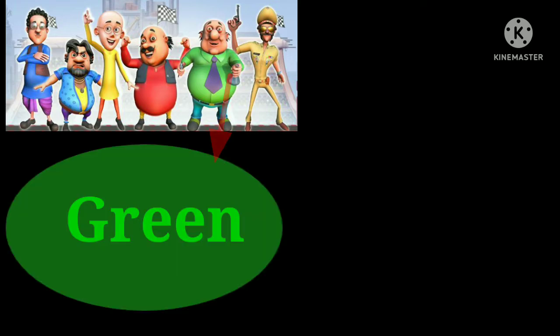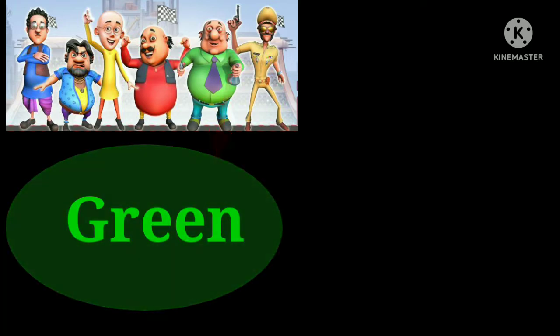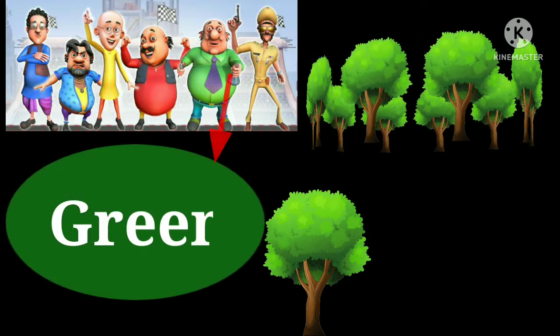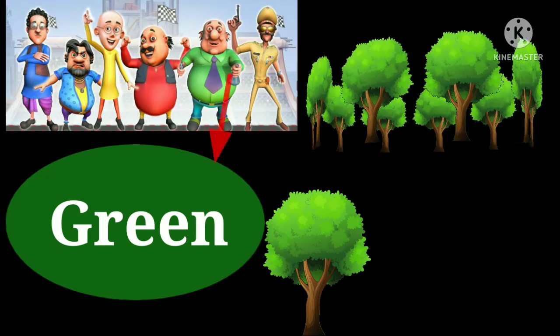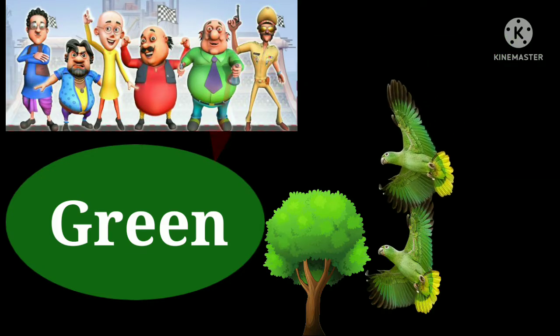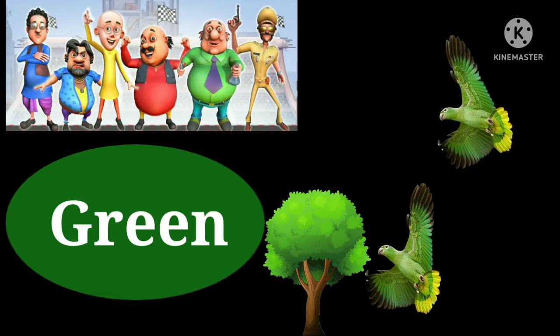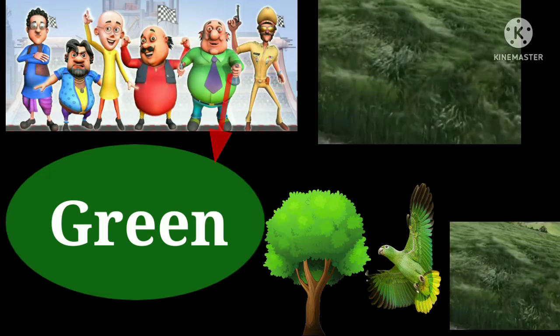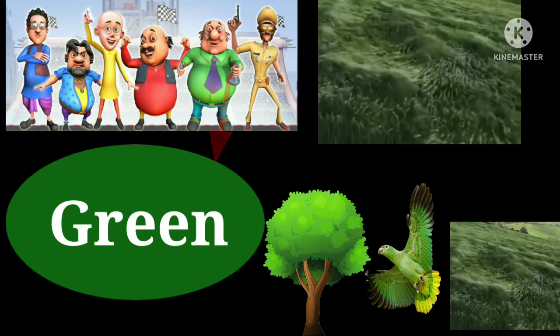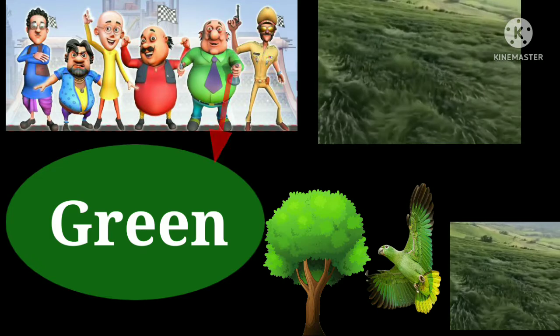Green color. G-R-E-E-N. Green. The tree is green. The parrot is also green. Blue color. B-L-U-E. Blue. The sky is blue.